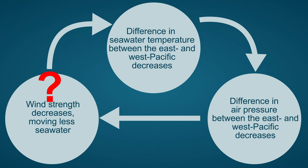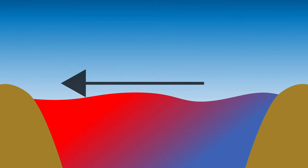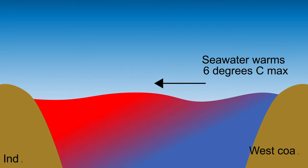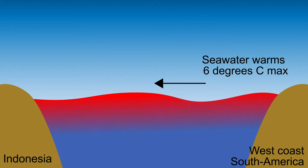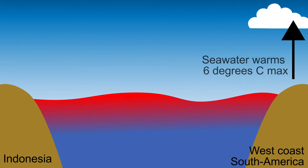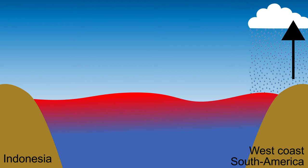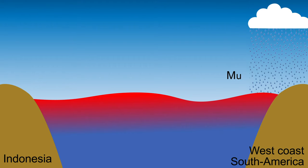El Niño occurs about every two to seven years. The strength of the trade winds decreases, making the wind to the west less strong. As a result, the ocean water remains just west of South America and warms up there by up to six degrees Celsius more than normal. This creates a low pressure area and precipitation falls in a normally dry area. Because there is hardly any vegetation in this area, the rainwater is not retained and mudslides can occur.